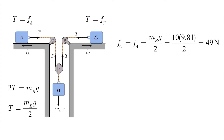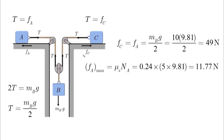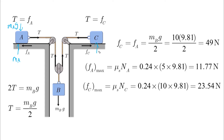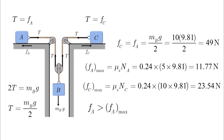The final step is to check the maximum static friction for both blocks. For A, the maximum static friction is μs × Na = 0.24 × MA × g = 11.77 N. For C, it is μs × Nc = 23.54 N. In both cases the actual friction force (49 N) is greater than the maximum static friction, which means motion will occur.